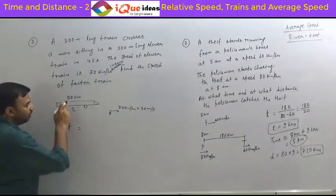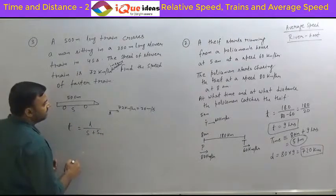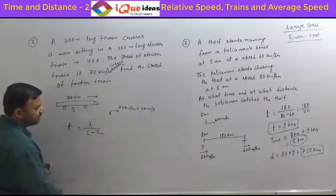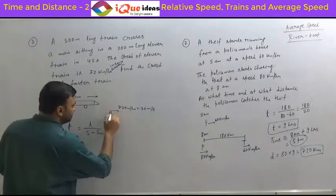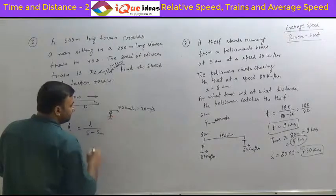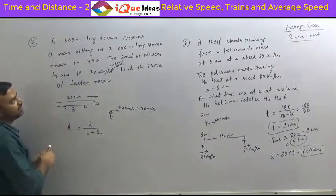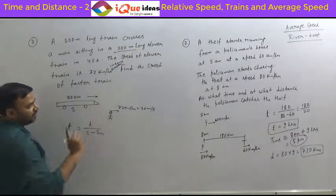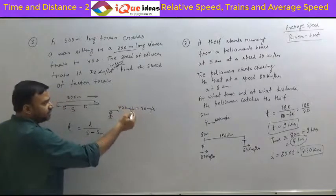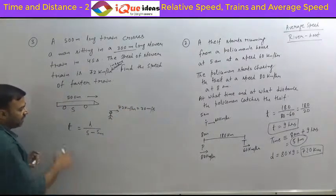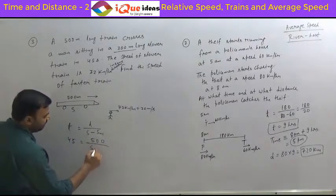So the time taken equals only the length of the fast train divided by the relative speed. Since they are in the same direction, it is S minus the speed of the man. Just to understand again: the man is sitting in the train, so his speed is the same as the slow train. That is the only relevance of the second train — the 300 meters is not required at all, only the speed is required. Time is given as 45 seconds, length is 500 meters, speed of the man is 20 m/s.